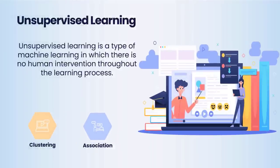Now let's talk about unsupervised learning. Unsupervised learning is a type of machine learning in which there is no human intervention throughout the learning process. The machine receives its training using a collection of data that has not been labeled, classified, or categorized in any way, and the algorithm is required to perform actions on this data without any supervision. The purpose of unsupervised learning is to reorganize the input data into new features or a collection of objects that have similar patterns. Unsupervised learning is a form of learning in which the end result is not preset. It can be further divided into clustering and association algorithms.